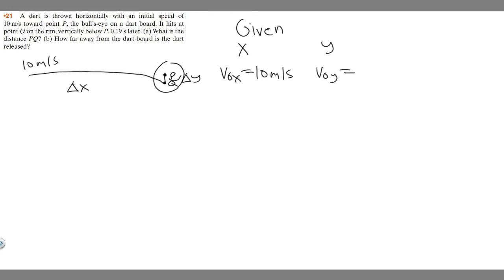In the Y direction, if they don't specify what it is, generally it's just going to be 0. So V₀y is 0 meters per second. We know the time it's going to take, the time to travel this is 0.19 seconds. It's going to be the same for both directions, 0.19 seconds.